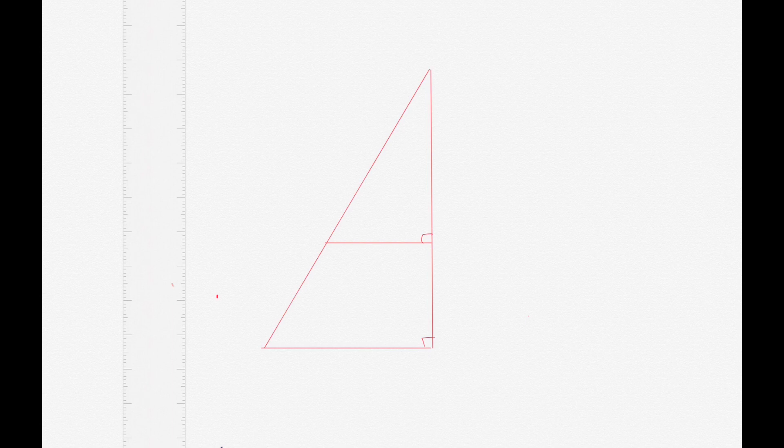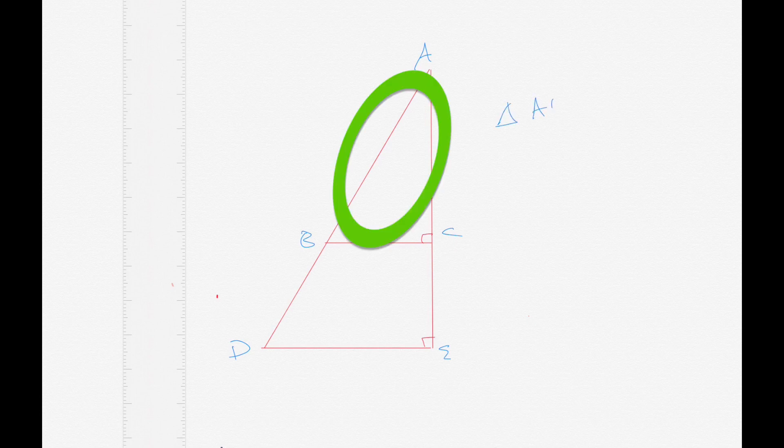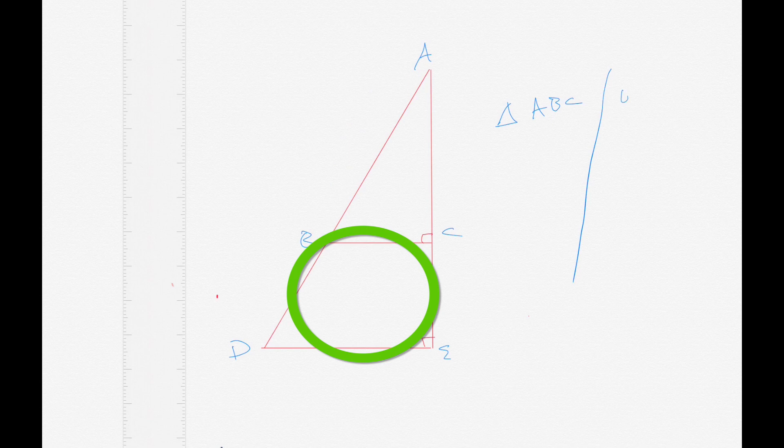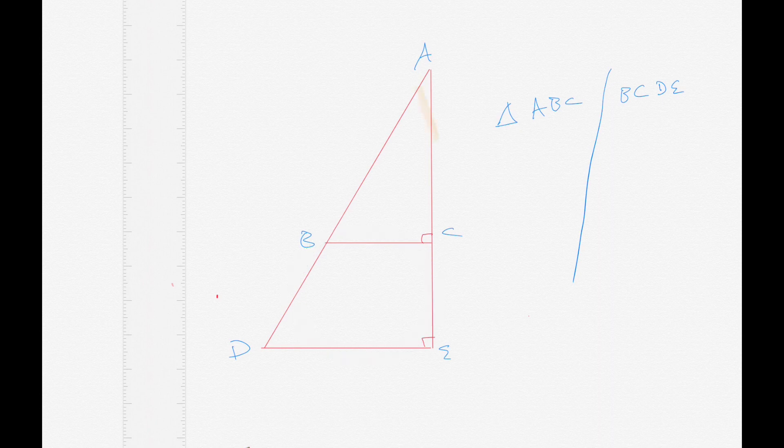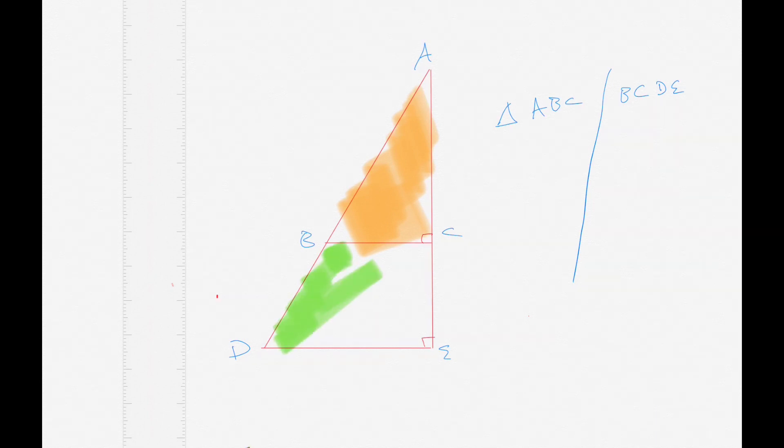So what we want to know, this is point A, this is point B, this is point C, point D, and point E. And what they're asking us is what is bigger? Quantity A is triangle ABC, and quantity B is the trapezoid B, C, D, E. If you look at it down here, this is quantity A, it's this triangle up here,